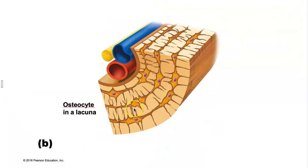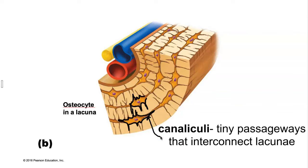Taking a closer look, we can see this is an osteocyte and the osteocyte exists in a lacuna — a little spot. Notice that there are little passageways that interconnect the osteocytes together. Although it looks like the osteocytes are completely isolated from each other, they actually grow processes that branch out and interconnect through a little network of passageways. Those little passageways are called canaliculi.